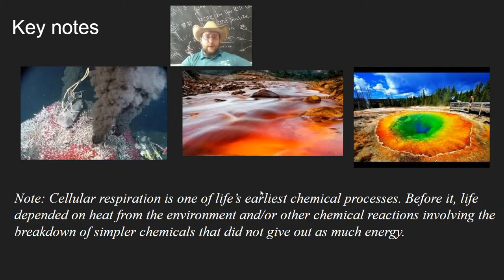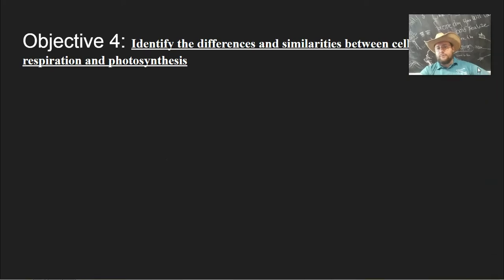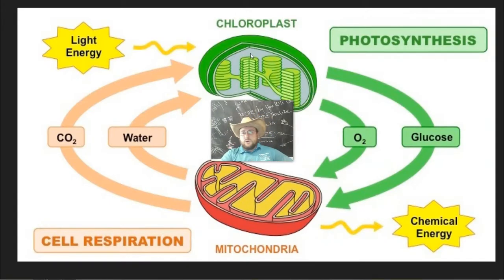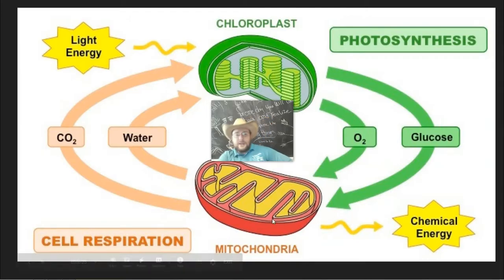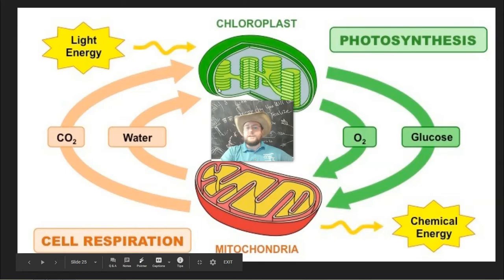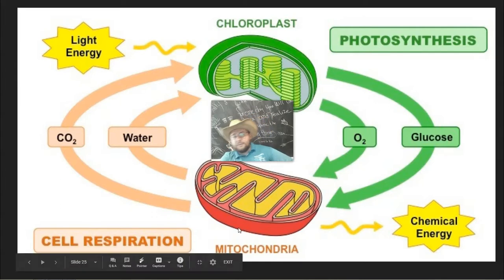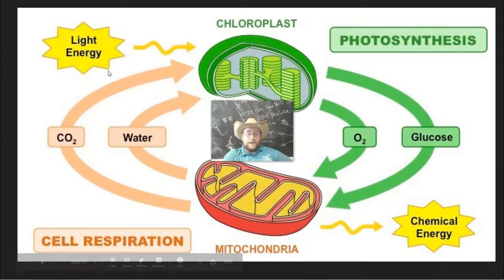Until these processes evolved, organisms were trapped living near volcanic vents, but afterwards it caused an explosion of life all throughout the planet. Lastly, remember that cell respiration and photosynthesis are opposite processes: the things that photosynthesis makes — glucose and oxygen — are the things cell respiration needs to make water and carbon dioxide, which are the things that photosynthesis uses. Chloroplasts do photosynthesis; mitochondria do cell respiration. The oxygen chloroplasts make gets converted into water by the mitochondria, which is then used by the chloroplasts to make oxygen again.